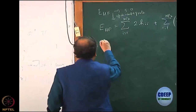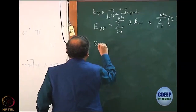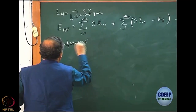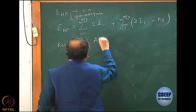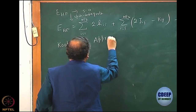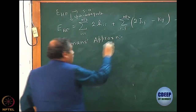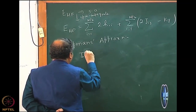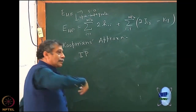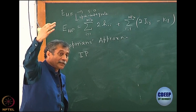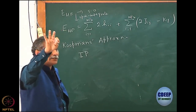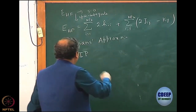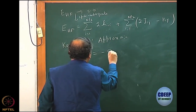Let us go back to Koopmans again. I hope you remember Koopmans approximation: if you take out an ionization from one molecular orbital — I am talking of molecular orbital, not atomic orbitals — then the energies are minus epsilon.